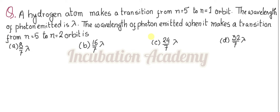Welcome everyone. The question states that a hydrogen atom makes a transition from n equal to 5 to n equal to 1 orbit, and the wavelength of the photon emitted is lambda. This is taken as a standard. We need to find the wavelength of the photon when it makes a transition from n equal to 5 to n equal to 2 orbit. The options are 8/7 lambda, 16/7 lambda, 24/7 lambda, and 32/7 lambda.